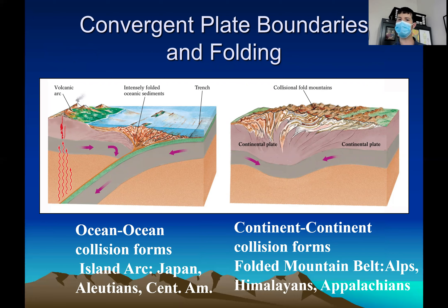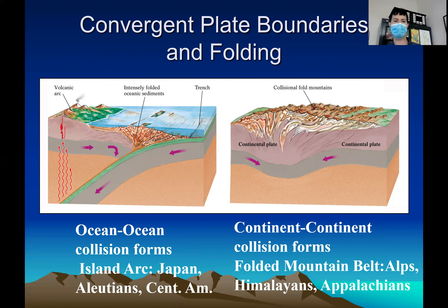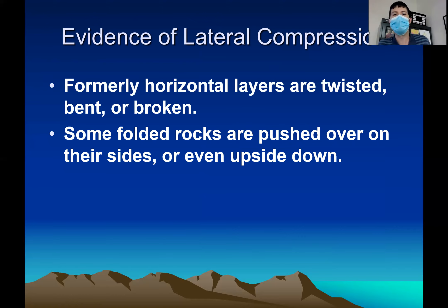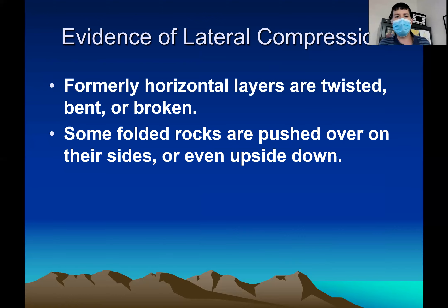These are detailed diagrams that show you how when two plates collide — two really big rocks collide — how they can distort the land around them. Evidence of lateral compression or distortion is a formerly horizontal layer that is twisted, bent, or broken, and some are folded or pushed over on their sides or even upside down.